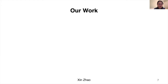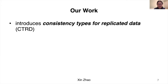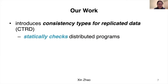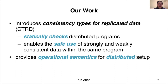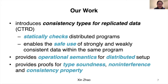Our work introduces Consistency Types for Replicated Data, CTRD, that statically checks distributed programs and enables the safe use of strongly and weakly consistent data within the same program. We provide operational semantics for a distributed setup, and provide proofs for type soundness, non-interference, and consistency properties.